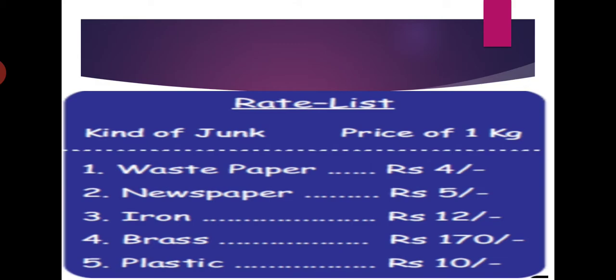Different junks are given. You can see the names of different junk: waste paper, newspaper, iron, brass, plastic. The price per kg for each is also given. Waste paper costs rupees 4, newspaper costs rupees 5, iron rupees 12, brass rupees 170, plastic rupees 10. This is the rate list of different kinds of junk.